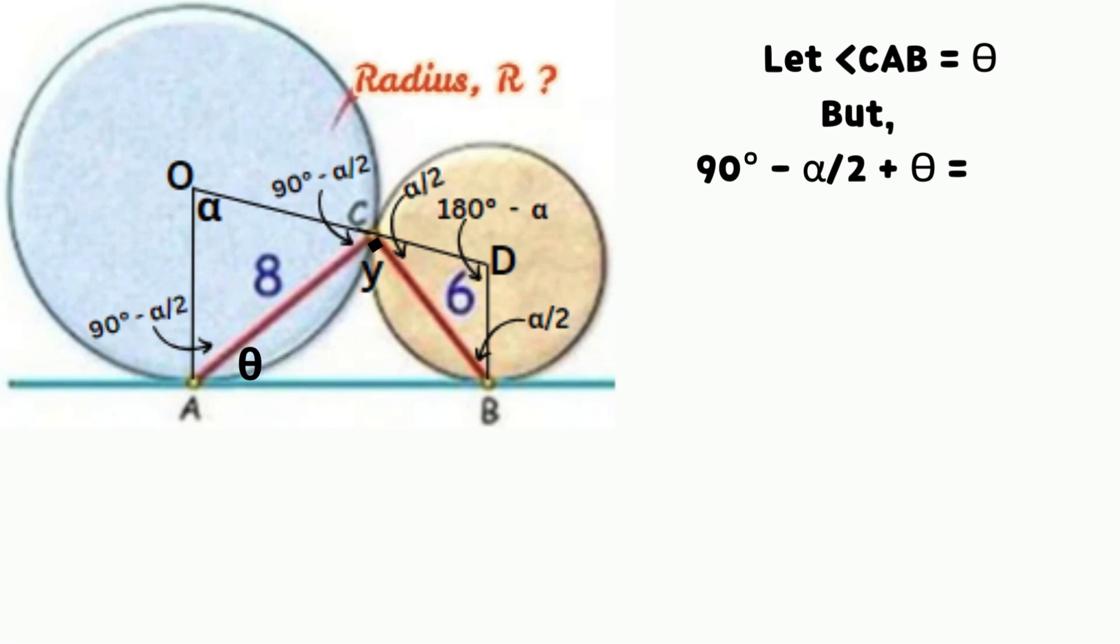Let angle CAB equals theta, solving for angle theta. Simplifying, we have that theta equals to alpha divided by 2. Thus, alpha equals to 2 times theta.